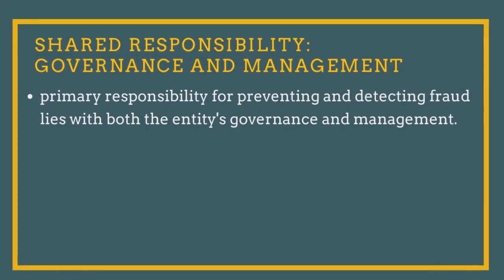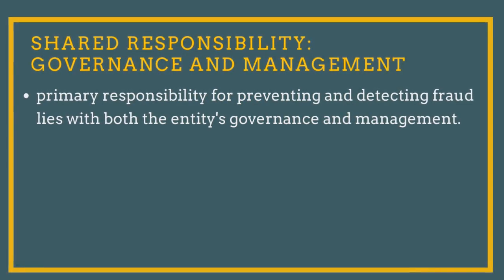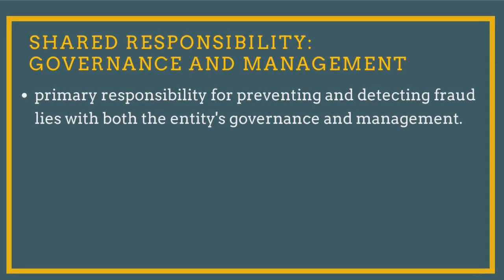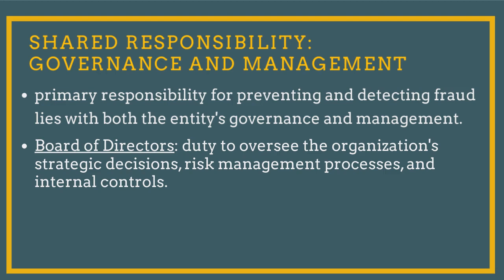The AICPA's AUC Section 240 states that the primary responsibility for preventing and detecting fraud lies with the entity's governance and management. Those charged with governance, including the Board of Directors, are responsible for overseeing the organization's strategic decisions, risk management processes, and internal controls. The Board must be actively involved in setting the ethical tone, establishing an anti-fraud culture, and promoting transparency.